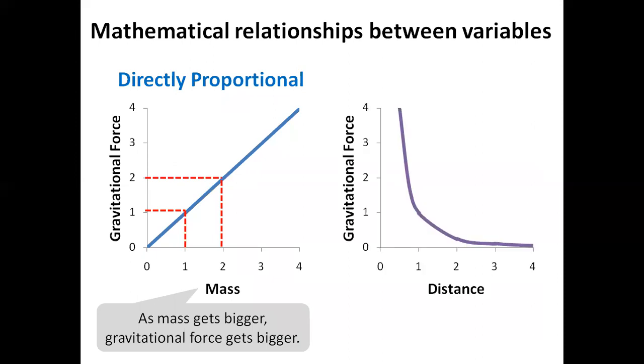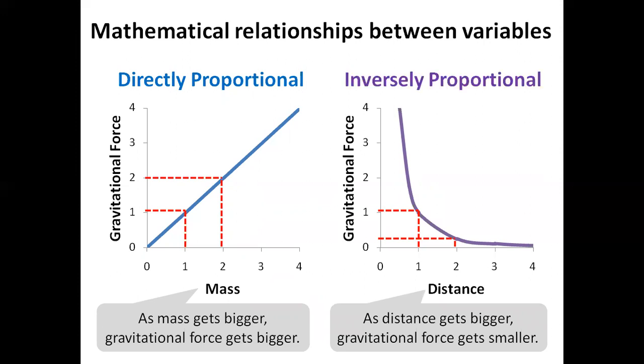Let's look at the relationship between distance and gravitational force. When distance is one, gravitational force is one. When distance is two, gravitational force is less than one, it's a quarter. As distance gets bigger, gravitational force gets smaller. This relationship is called inversely proportional.